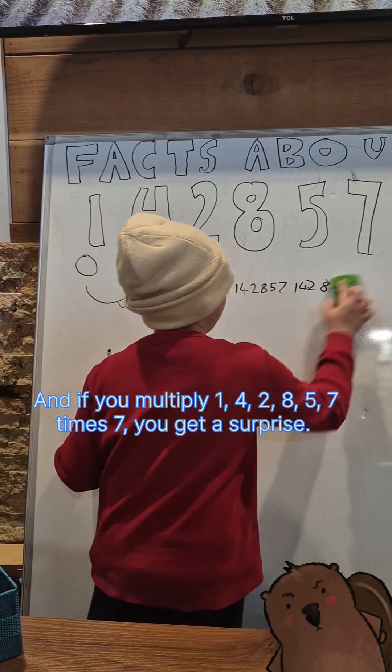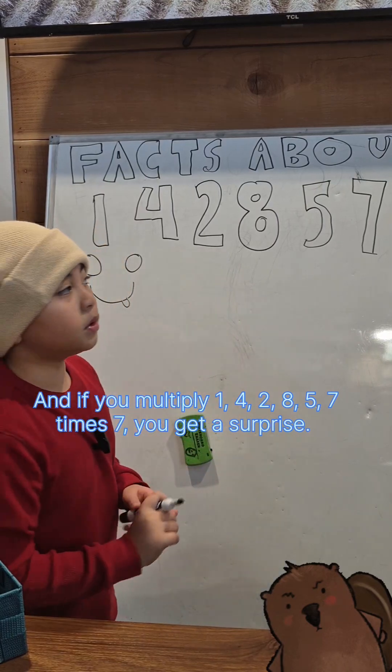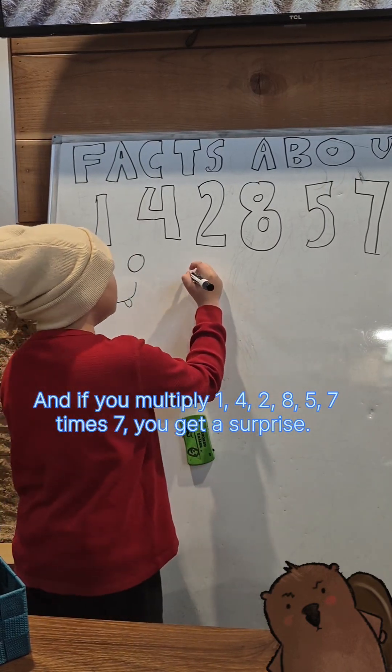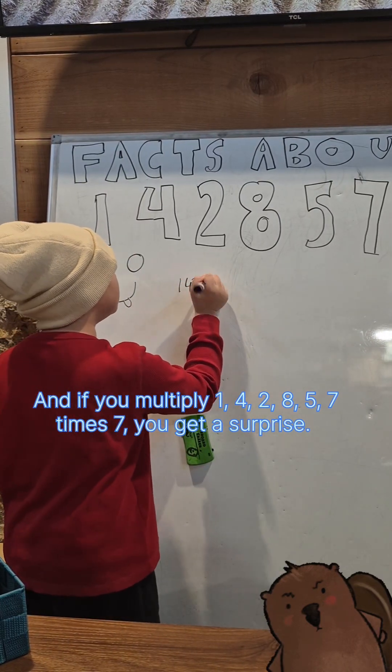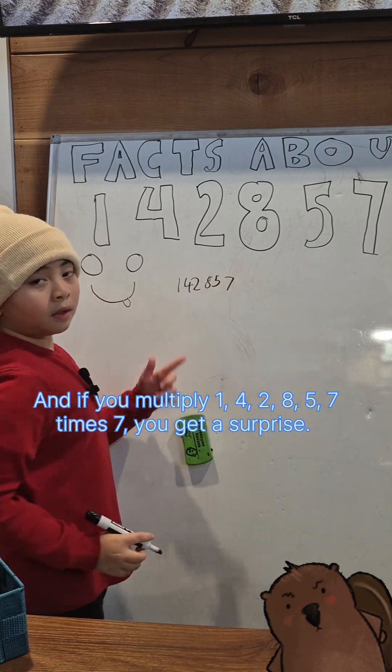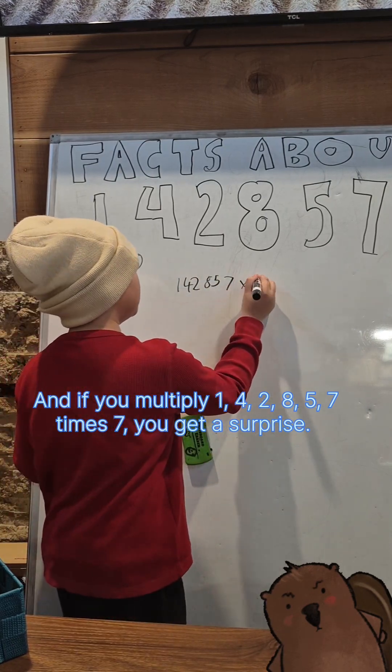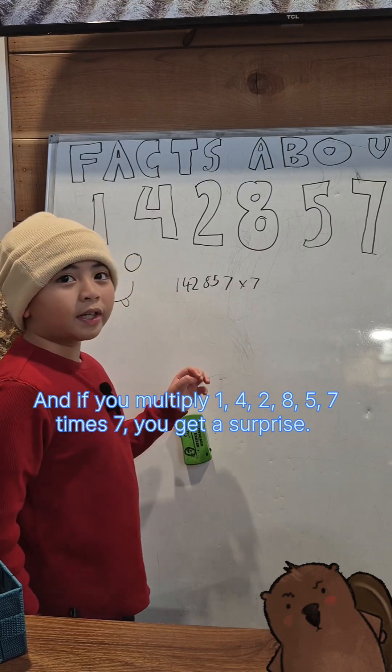remember that whole number. And if you multiply 142857 times 7, you get a surprise.